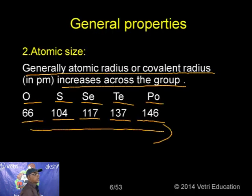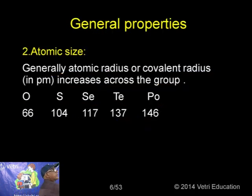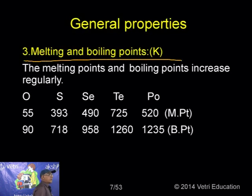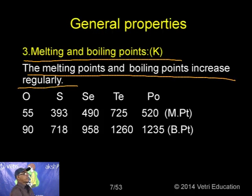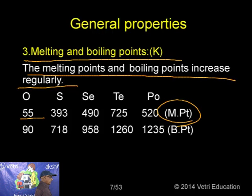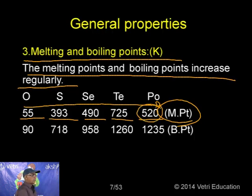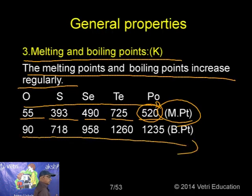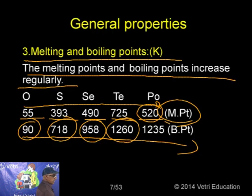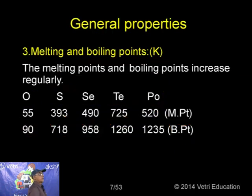For melting and boiling points, they generally increase down the group. Melting points in Kelvin: Oxygen 55, Sulphur 393, Selenium 490, Tellurium 725, and Polonium 520 — with an exception at Polonium. Boiling points increase without exception: Oxygen 90, Sulphur 718, Selenium 958, Tellurium 1260, and Polonium 1235 K.